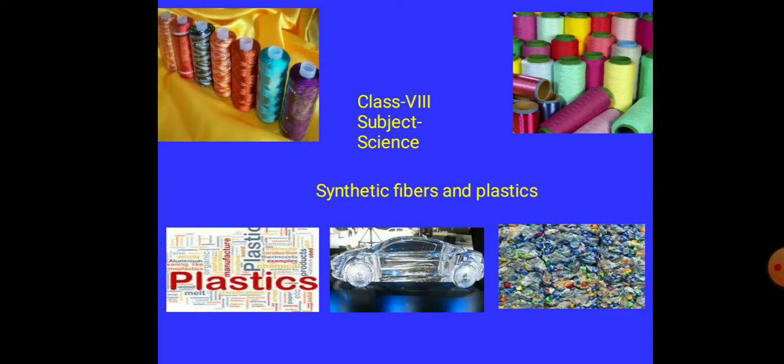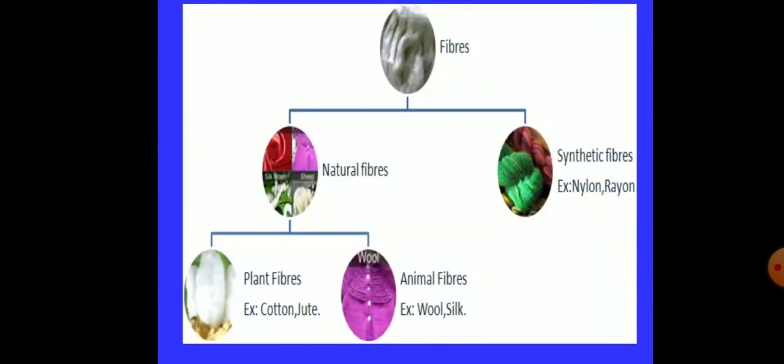You might have observed whenever your mother is purchasing some clothes, the shopkeeper asks which kind of material do you want? Cotton, silk, rayon, which kind? These all are fabrics made up of fibers. Fibers are thin thread-like structures. Fibers can be divided into two parts: natural fibers and synthetic fibers.